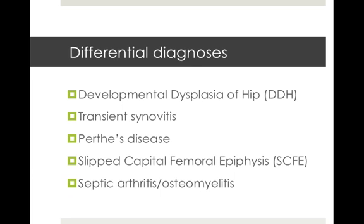Some of the differential diagnoses that cause hip pain in kids that we'll cover today include developmental dysplasia of the hip, transient synovitis, Perthes disease, slipped capital femoral epiphysis or SCFE, and the one not to miss — septic arthritis and osteomyelitis.